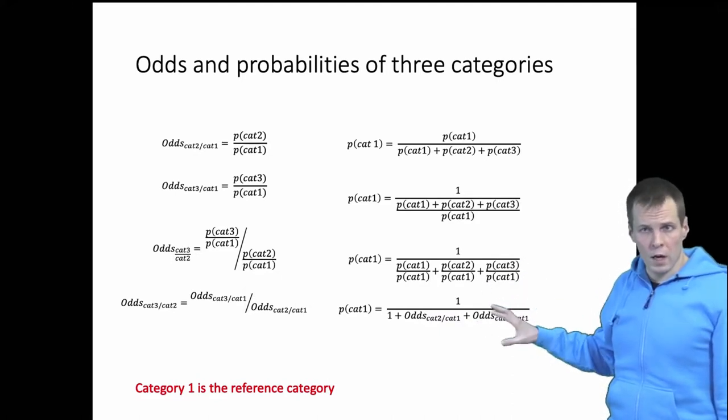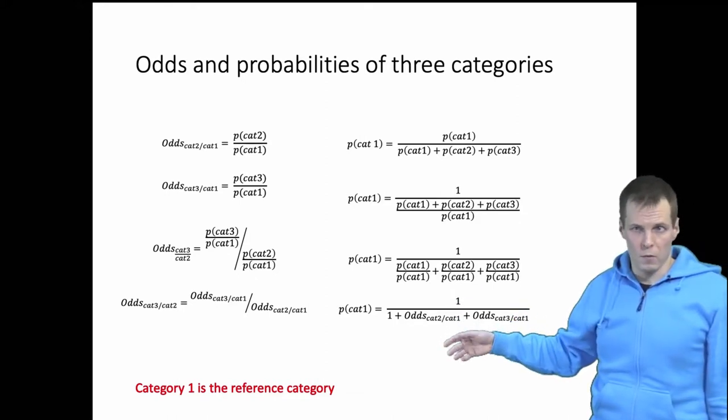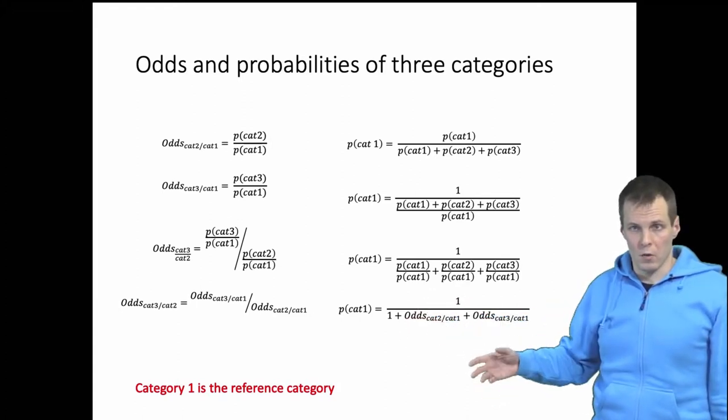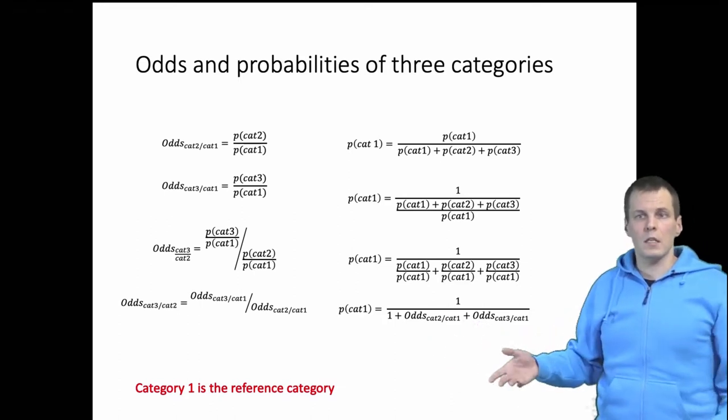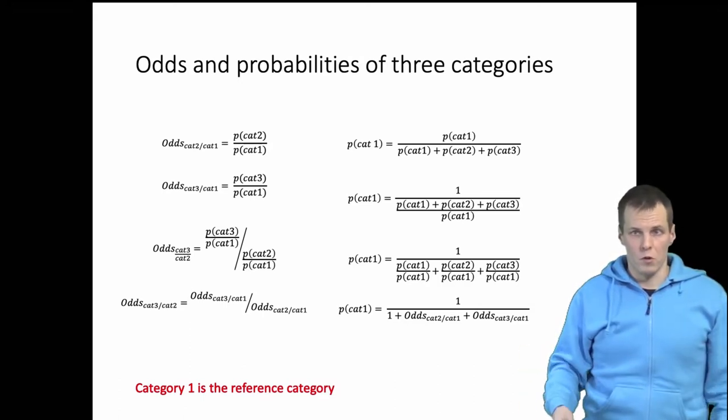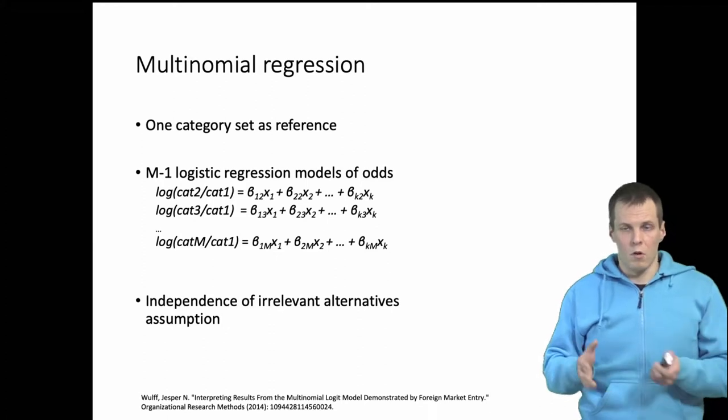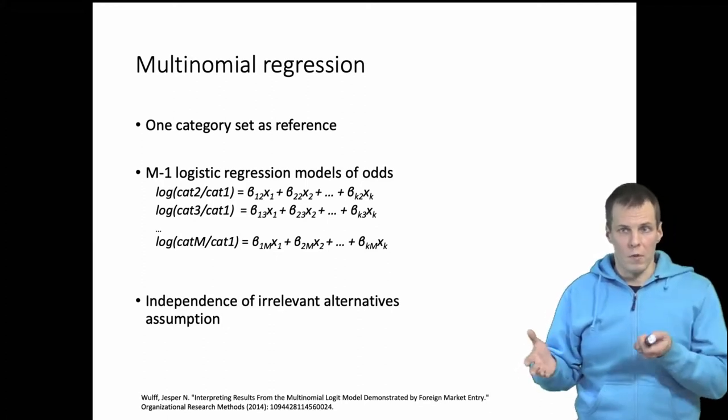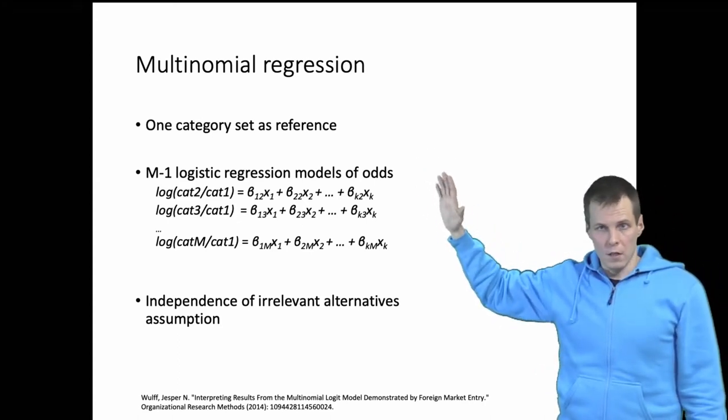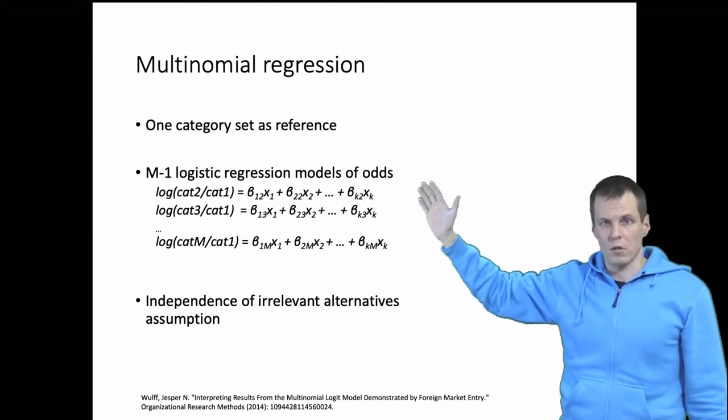When we do two models that explain two different odds, then we can calculate the probabilities of all three outcomes - Finland, Sweden, and Norway - and that allows us to calculate the likelihood and estimate the model. This idea of explaining two or more different odds using different sets of regression analysis is called multinomial regression analysis. One category is set as reference, and then we calculate M minus one, where M is the number of categories, regression or logistic regression models.